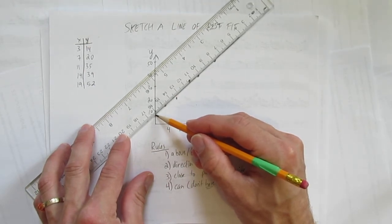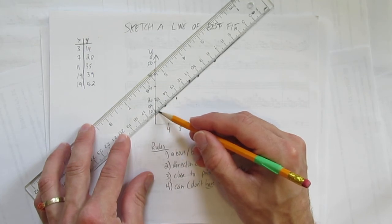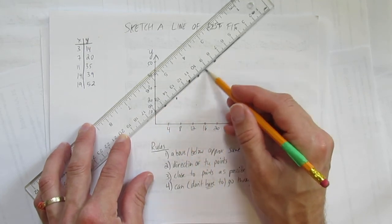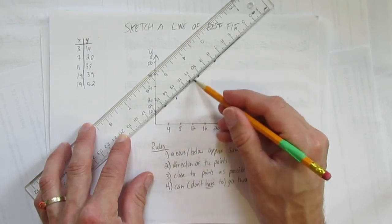I think this is good, but I'm going to draw it light at first so I can erase easier. It looks like it might go through three points. I'm very close. Let's try that. Wow. That's a nice line of best fit.